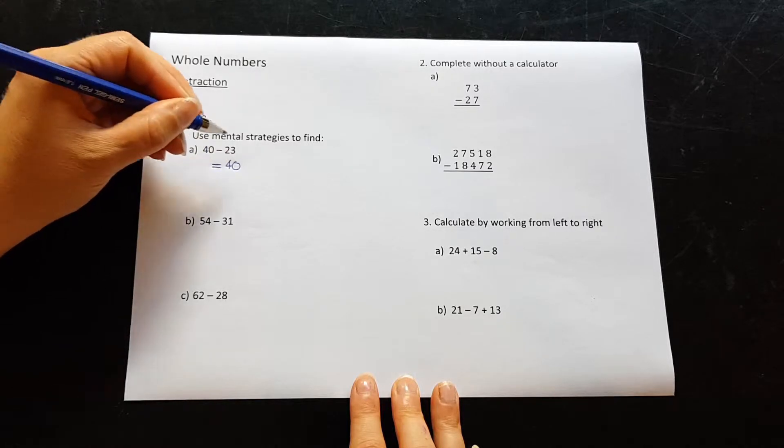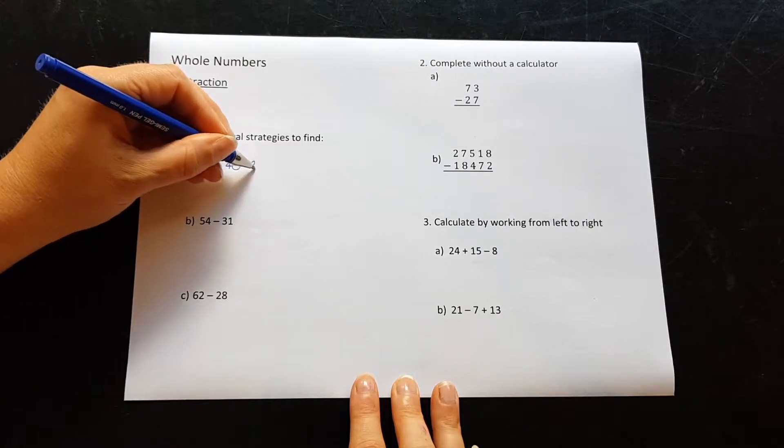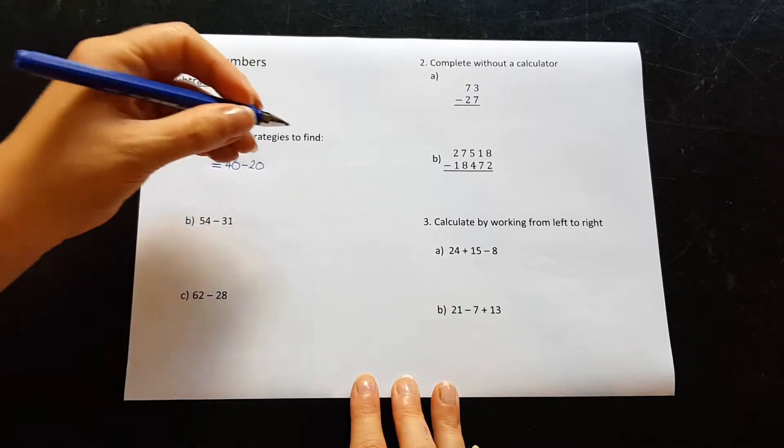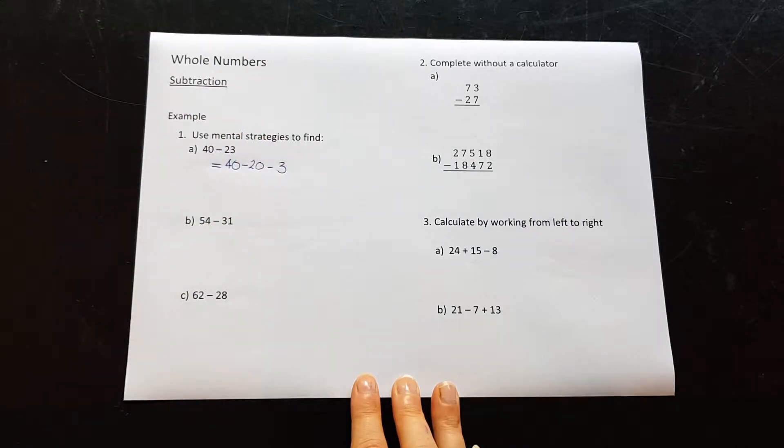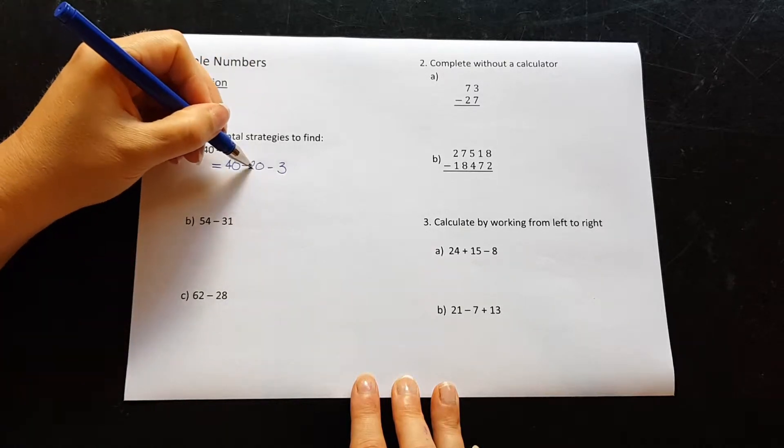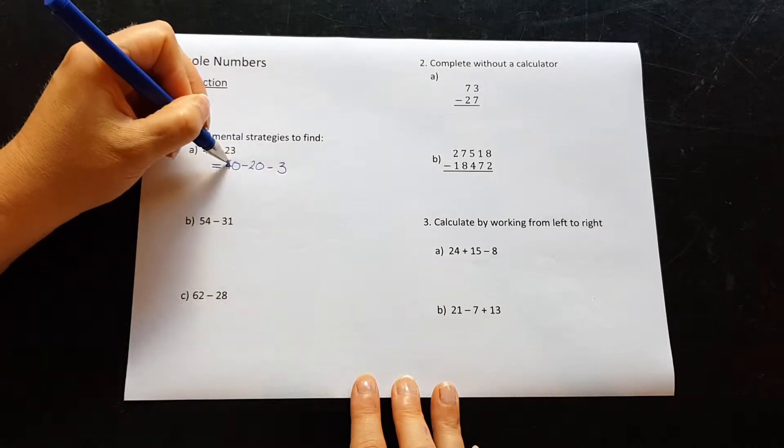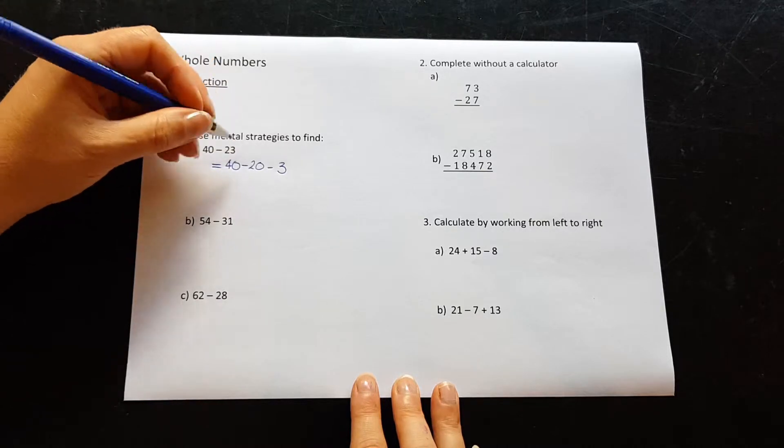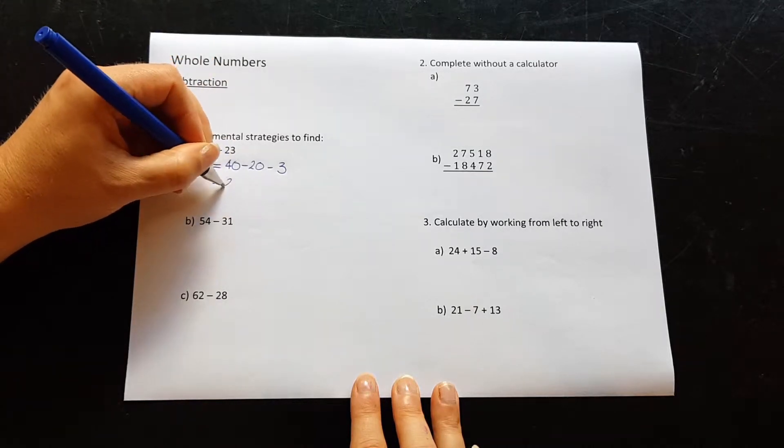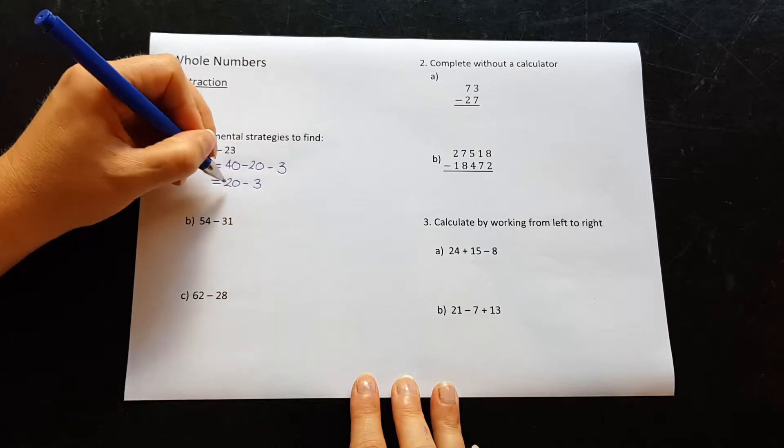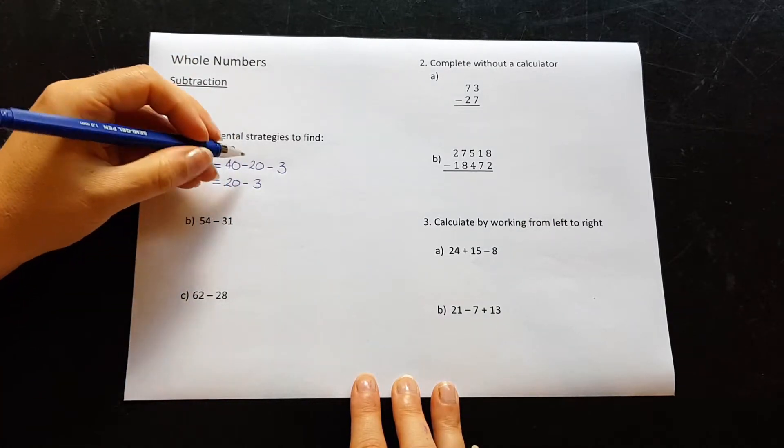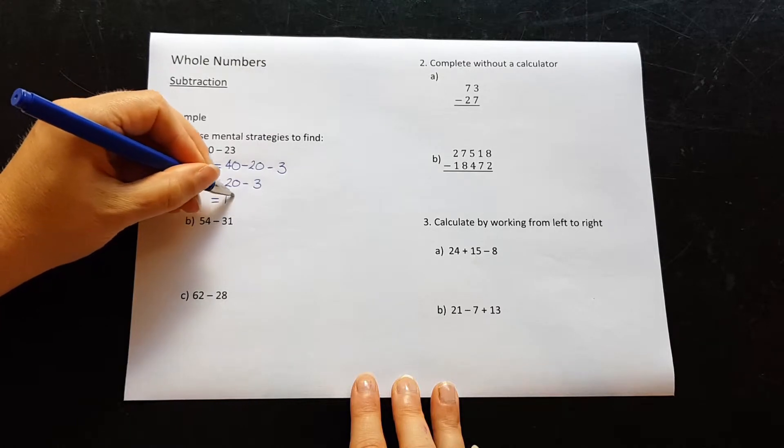I'm going to start with 40, take away the 20 because that's easy to do, and then take away the 3. If I take 20 away, I take that off the tens. So 40 take away 20 is 20. And I still have to take away my other 3. 20 take away 3 is, counting back 3, you get 17.